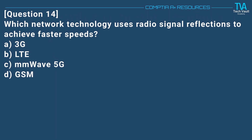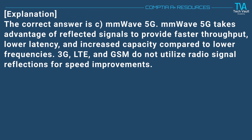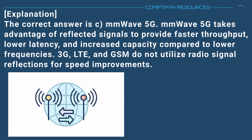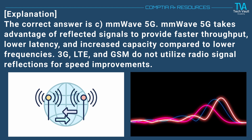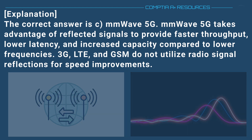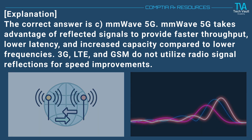Question 14. Which network technology uses radio signal reflections to achieve faster speeds? A. 3G. B. LTE. C. mmWave 5G. D. GSM. The correct answer is C. mmWave 5G. mmWave 5G takes advantage of reflected signals to provide faster throughput, lower latency, and increased capacity compared to lower frequencies. 3G, LTE, and GSM do not utilize radio signal reflections for speed improvements.